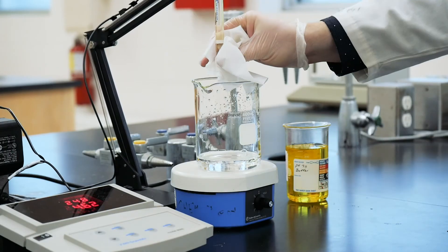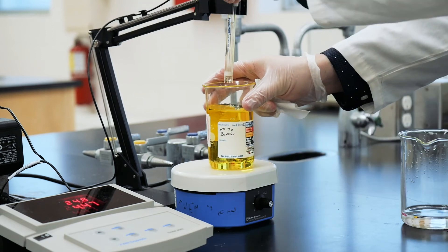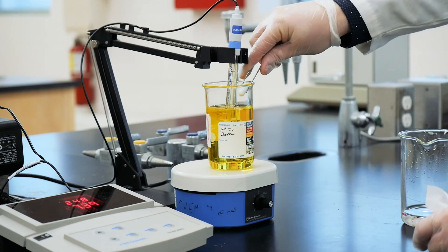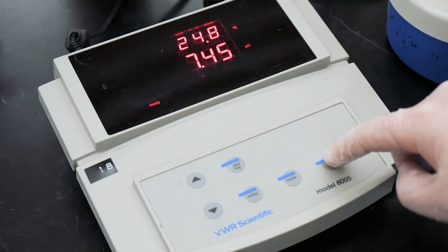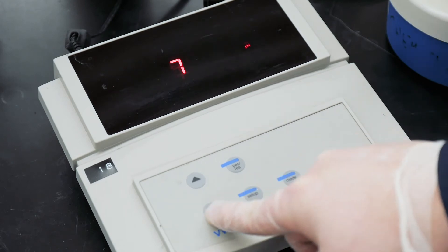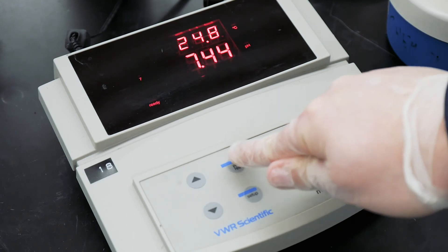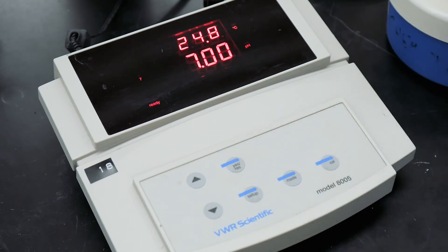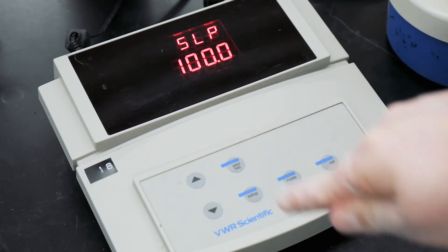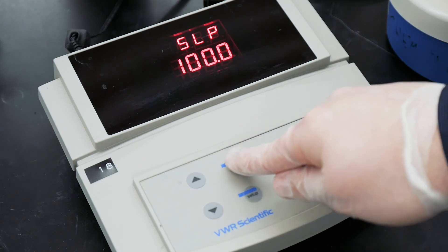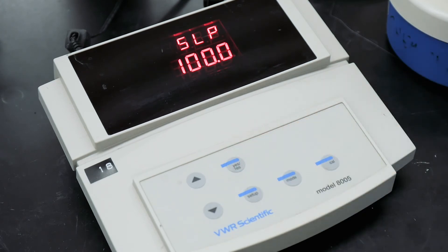Place the pH electrode in that buffer solution on top of the stirring plate. Once the solution is stirring, press the CAL button, followed by the UP or DN buttons until the screen reads 7 pH, like so. Next, press the YES button, and the screen will read ready. Press YES to accept, and then YES once more when the screen reads SLP100. One more YES, and we're all done and ready to use your pH meter.